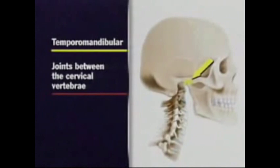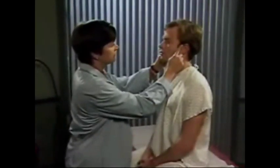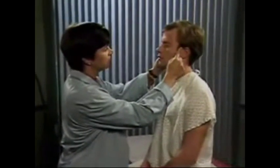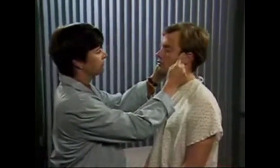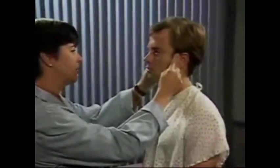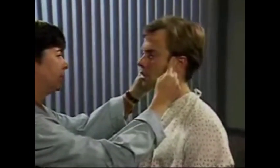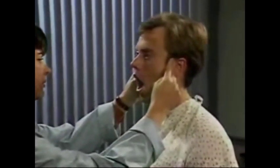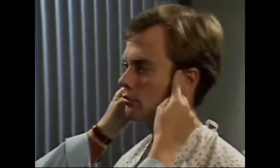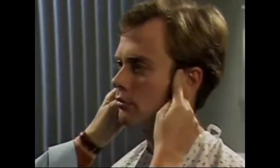Begin the exam by assessing the temporomandibular joint. Place the tip of your index finger in front of the tragus of each ear and open and close your mouth. Then ask the patient to open his mouth. Observe the movement of the jaw, feel for swelling, and note any tenderness or crepitus.